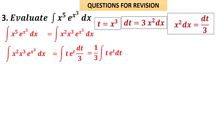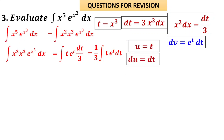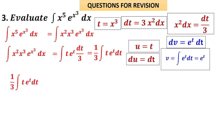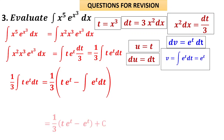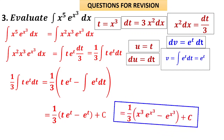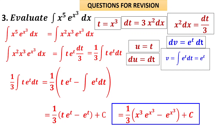After substitution, we visualize it as polynomial times exponential. Take u = t, dv = eᵗ dt, du = dt, v = eᵗ. Applying the formula: (1/3)[t·eᵗ − integral eᵗ dt] = (1/3)[t·eᵗ − eᵗ] + c. Resubstituting t = x³: the final answer is (1/3)[x³·e^(x³) − e^(x³)] + c.